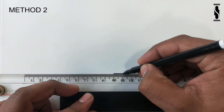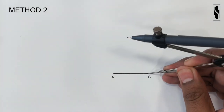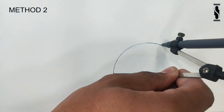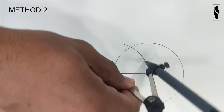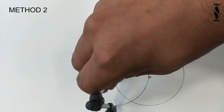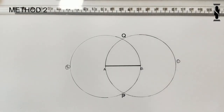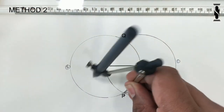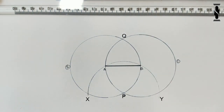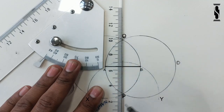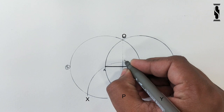Method 2. Draw line AB according to the given length of the pentagon. With center B and radius equal to AB, draw the first circle. With center A and radius equal to AB, draw the second circle, which will cut the first circle at points P and Q. With center P and radius equal to AB, draw an arc which will cut the first and second circles at points X and Y. Draw the perpendicular bisector of line AB by joining points P and Q, which will cut the XY arc at point R.